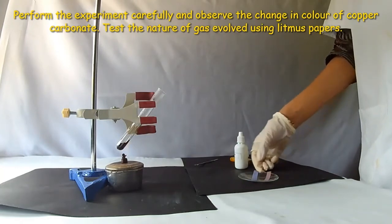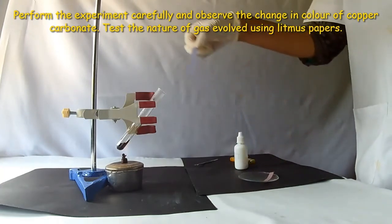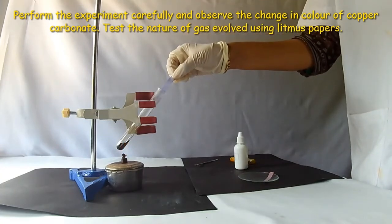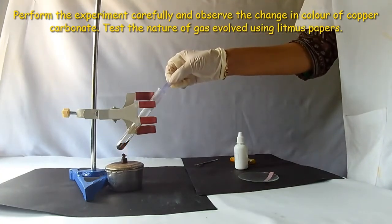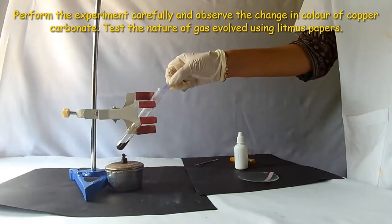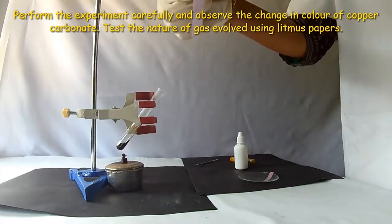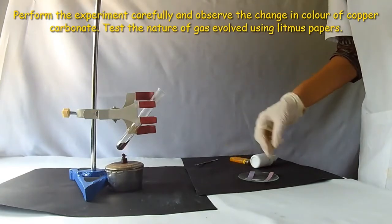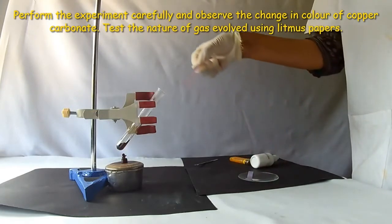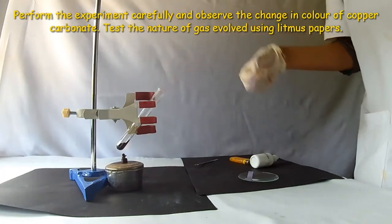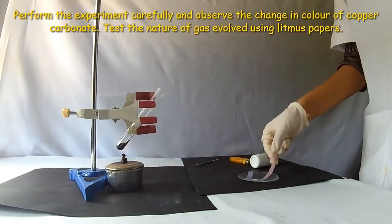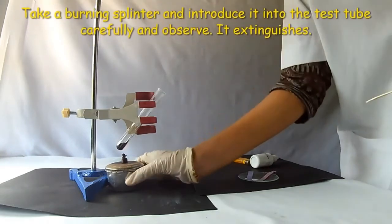Now, test the nature of the gas that is evolved, that is carbon dioxide. Insert blue moist litmus paper into the test tube. Observe the change in color. It changes slightly to red. There is no change in color when red litmus is introduced, thus proving that carbon dioxide is acidic in nature.